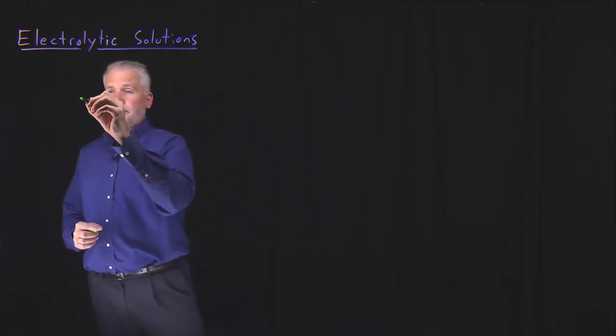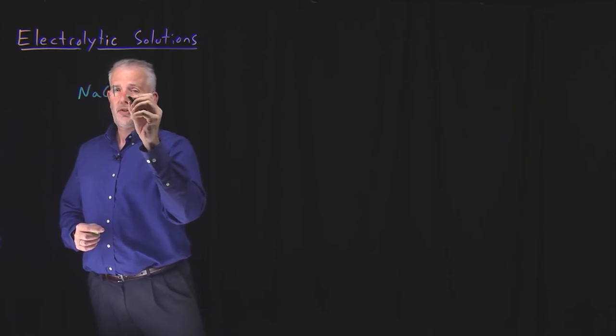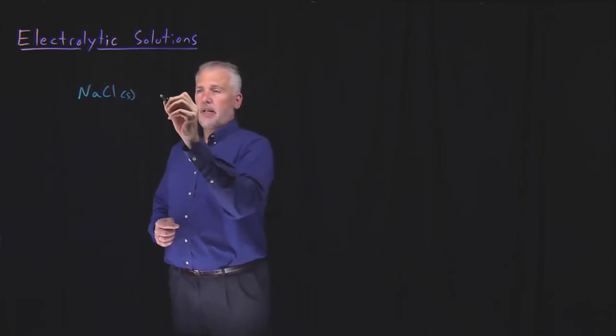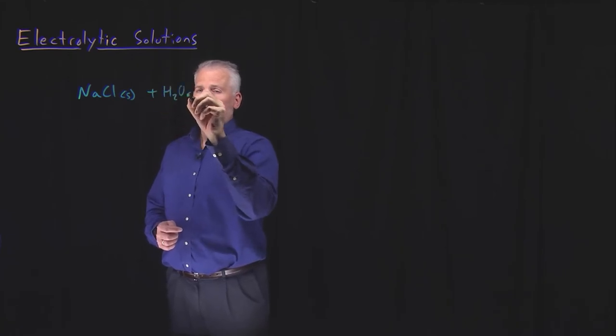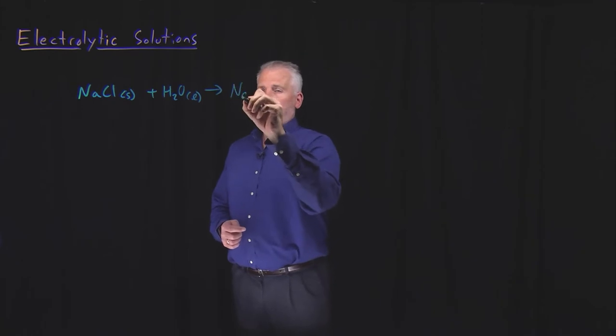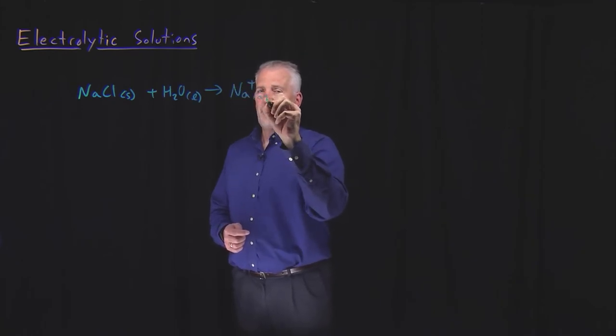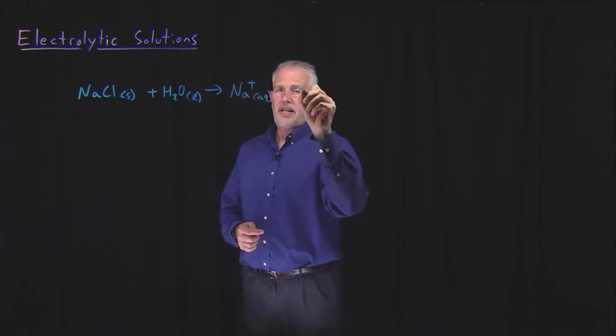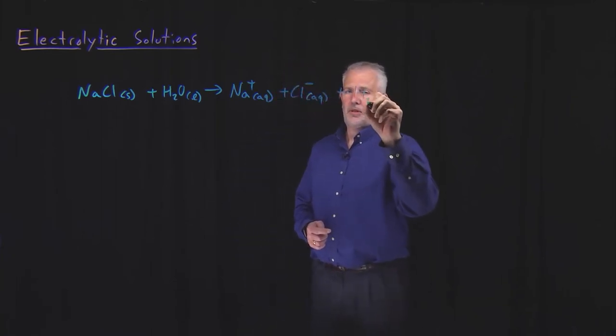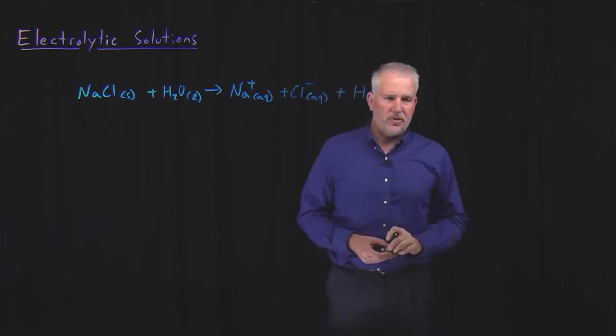But for electrolytic solvents, solvents that dissociate into ions when you dissolve them, for example, sodium chloride is an electrolytic solvent meaning when I dissolve it in water, what I end up with is aqueous sodium ions and aqueous chloride ions, and of course water in the solution as well.